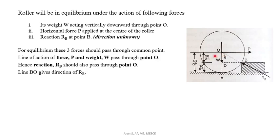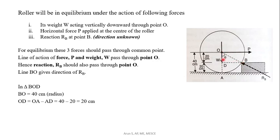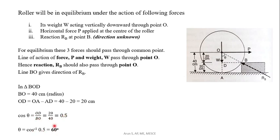In triangle BOD, OB is the radius, equal to 40 cm. OD is equal to OA minus AD, where OA is the radius and AD is the height of the block, so OD equals 20 cm. Now, cos theta equals the adjacent side over the hypotenuse, which is OD over OB, giving 20 over 40 equals 0.5. Therefore theta equals cos inverse of 0.5, which gives 60 degrees.